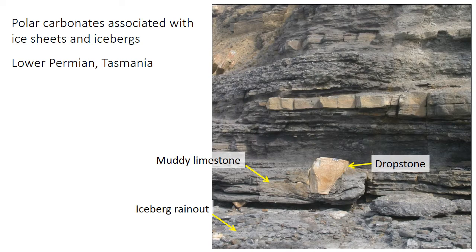Carbonates can form in cool water environments — they can even form in polar environments near active ice sheets. This section here is from the lower Permian of Tasmania, and it contains a variety of shell-rich and muddy limestones, but those carbonates also contain granitic boulders and other rocks dropped from icebergs. The large angular dropstone that I've marked there is within a limestone bed, and it's in fact crushing carbonate-producing organisms like bryozoans. So it's a very unusual and extreme carbonate environment.